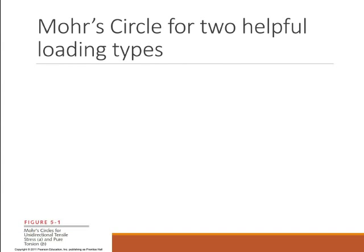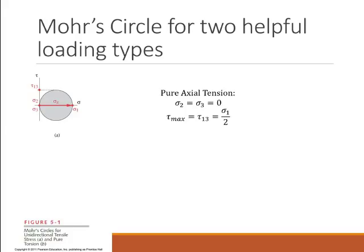Before we get going any further, it would be helpful to consider two special types of loading. The first one is pure axial tension. When we have pure axial tension, we only have sigma 1, so sigma 2 is equal to sigma 3, which is equal to 0. The Mohr's circle looks like this, so we can see that tau max is equal to sigma 1 over 2.